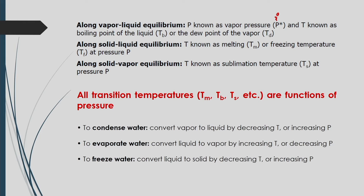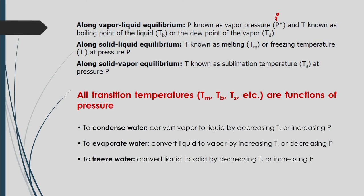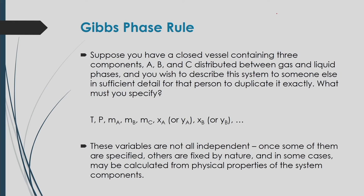To condense water, convert vapor to liquid by increasing temperature or decreasing pressure. To evaporate water, convert liquid to vapor by increasing temperature or decreasing pressure. To freeze water, convert liquid to solid by decreasing temperature or increasing pressure. The phase diagram provides all this information from its transition points.